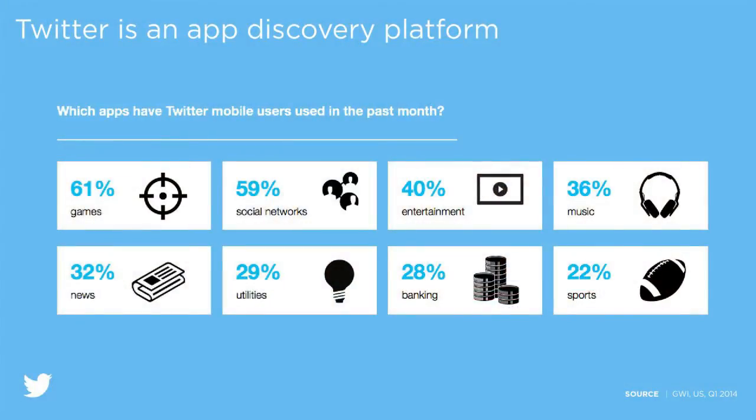App discoverability is a key challenge for every marketer here — it's a pain point in the industry. We see that user behavior on the platform leverages that: Twitter is an app discovery platform. 65% of our users have installed an app in the last month, and it's not across one single category — it's across every single category in the app store, from mobile gaming through to sports through to entertainment. There are two million apps in both the iOS and Play stores respectively. The challenge is how can you break through that noise and clutter that exists in the marketplace today.